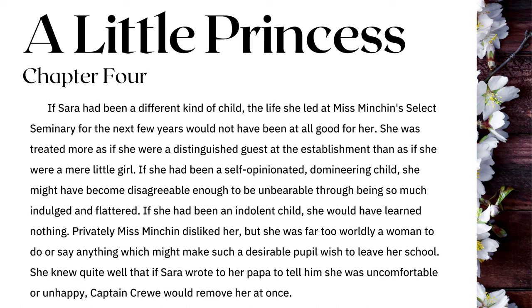A Little Princess, Chapter 4: 'If Sarah had been a different kind of child, the life she led at Miss Minchin's select seminary for the next few years would not have been at all good for her. She was treated more as if she were a distinguished guest of the establishment than as if she were a mere little girl. If she had been a self-opinionated, domineering child, she might have become disagreeable through being so much indulged and flattered. Privately, Miss Minchin disliked her, but she was far too worldly a woman to do or say anything which might make such a desirable pupil wish to leave her school. She knew quite well that if Sarah wrote to her papa to tell him she was uncomfortable or unhappy, Captain Crewe would remove her at once.'